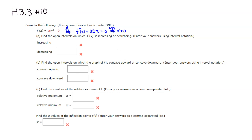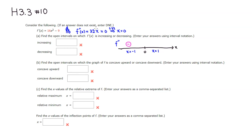Now we can do a number line. We put a tick mark at 0, then look at the sign of f double prime. I pick a random number less than 0, so x equals negative 1. Plugging in: 32 times negative 1 gives a negative number, so I indicate a negative sign there.